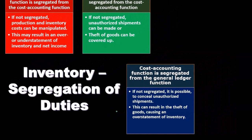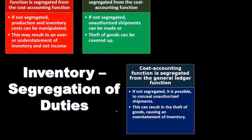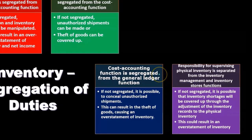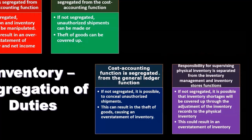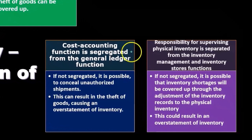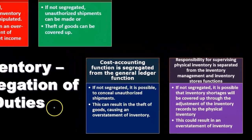The cost accounting function separated from the general ledger function prevents concealment of unauthorized shipments, which could otherwise result in theft of goods and overstatement of inventory. Additionally, responsibility for supervising the physical inventory is separate from the inventory management and inventory stores functions. If not segregated, inventory shortages could be covered up by adjusting the inventory records to match the physical count, resulting in an overstatement of inventory.